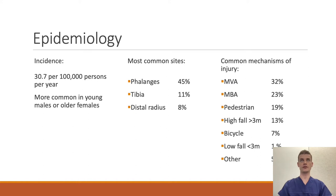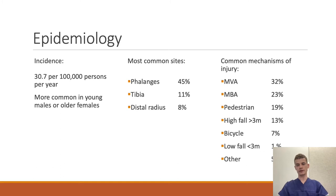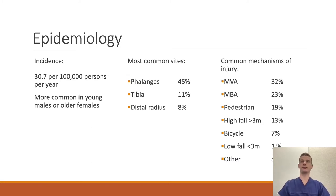The most common sites are the phalanges, which are about half of all open fractures, followed by the tibia, the distal radius, and then the other bones of the body. Most of these seem to be related to motor vehicle accidents, and pedestrian injuries involve a pedestrian being hit by a car or bike.